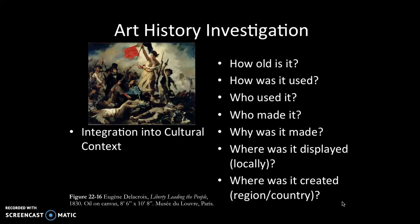Eugène Delacroix painted this — he was a French painter. Sometimes where the painting is now, in the Musée du Louvre in Paris, doesn't tell us where it was originally made, but in this case, this is a French painting. So in France in 1830 — anybody know what was going on? There was this French Revolution thing happening. This is the French flag. All of those pieces together help us understand that this painting is related to the French Revolution in some way.